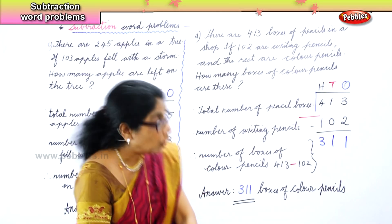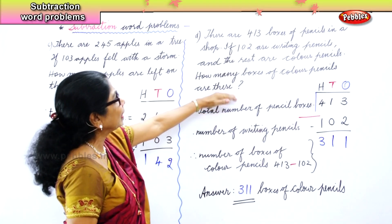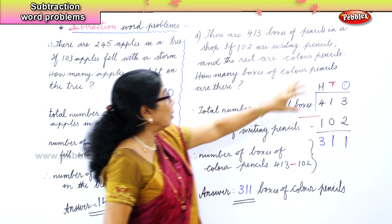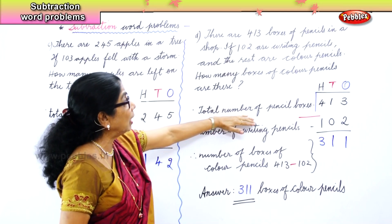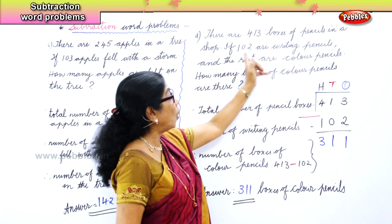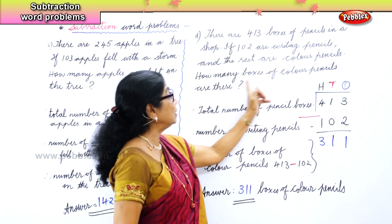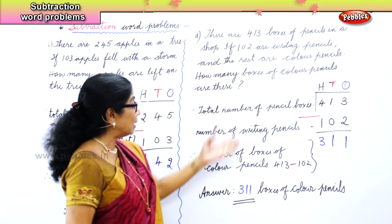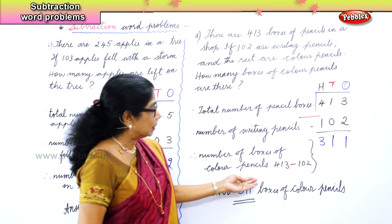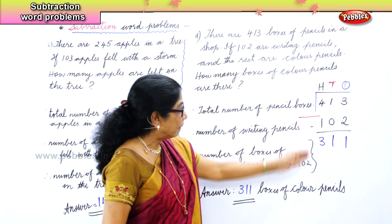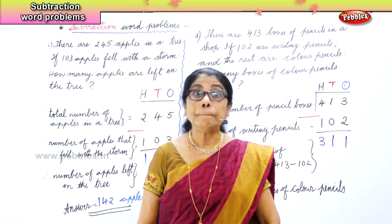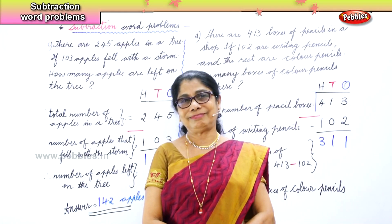So what did we learn today? We learnt to look at the problem: first statement, total number of pencil boxes — four hundred and thirteen. Number of writing pencils — one hundred and two. What is asked? How many boxes of colour pencils are there? Therefore, number of boxes of colour pencils: four hundred and thirteen minus one hundred and two. Your answer is three hundred and eleven boxes of colour pencils.